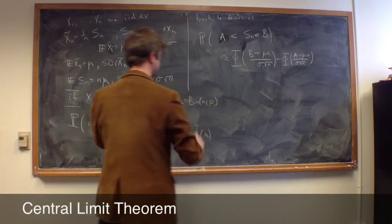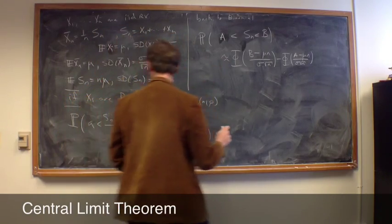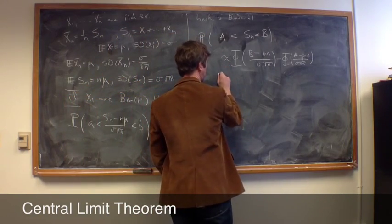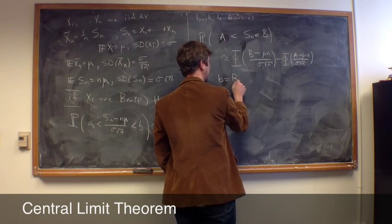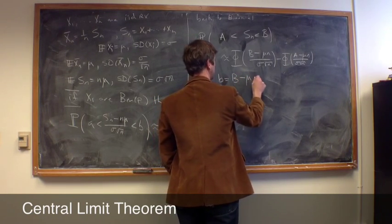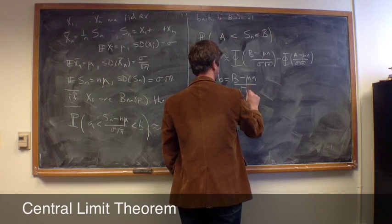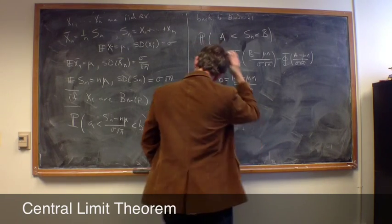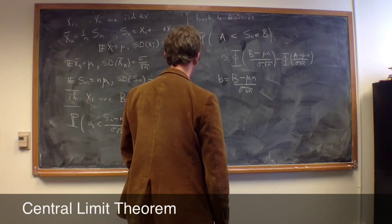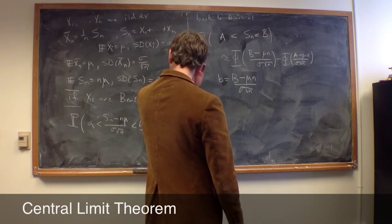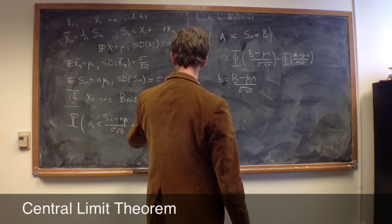And so, if we just now, just to see how these two things translate back and forth, we can set, let's just do one of them, let's set b equal to capital B minus mu n over sigma square root of n. Then, if we solve back for what, if this says the same thing, let's just notice that now,